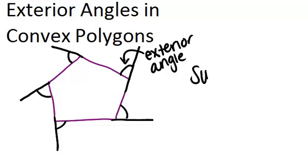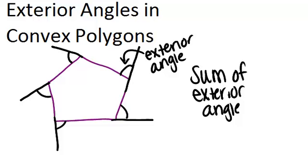So the sum of exterior angles always is the same number. It's always 360 degrees for any polygon, no matter how many sides it has.